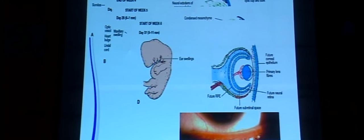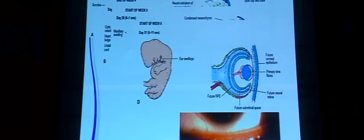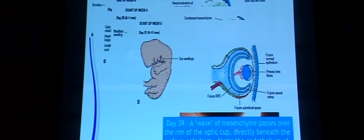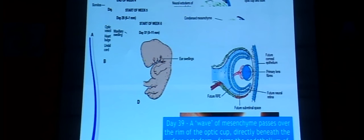The surface ectoderm forms a single layer, which is the future corneal epithelium. By day 39, we have the first wave of mesenchyme, which passes from the rim of the optic cup directly beneath the surface ectoderm and forms the future corneal endothelium and trabecular meshwork.